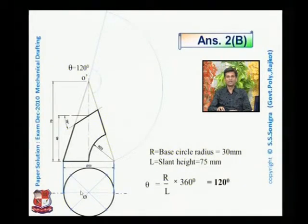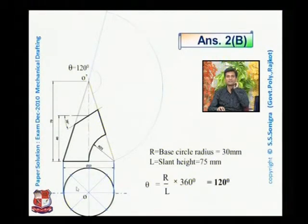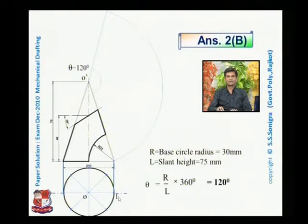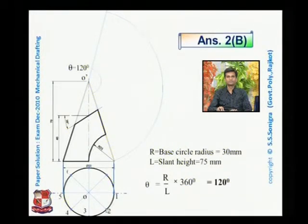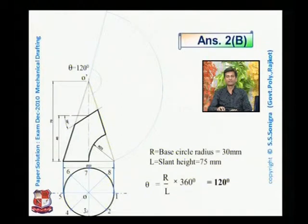All these lines would be at an angle of 45° to each other. So these are the imaginary generators drawn in the top view. Similarly, project and name these points: point number one, two, three, four, and so on. Here point number six, seven, and eight. So eight points are there over the periphery of the circle.